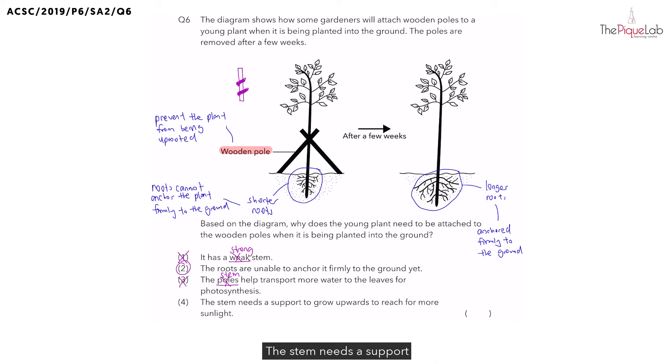Let's look at option four. The stem needs a support to grow upwards to reach for more sunlight. Let's recall, what kind of plants require a support? Is it plants with weak stems or strong stems? Yes, it is plants with weak stems. But remember, this plant has a strong stem. So, does the stem need a support? No, it does not need a support. Therefore, four is out and the correct answer should be two.